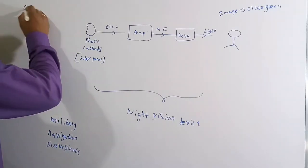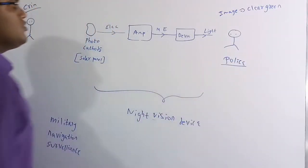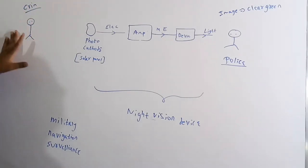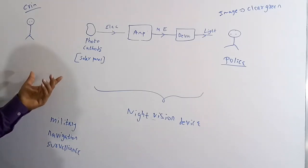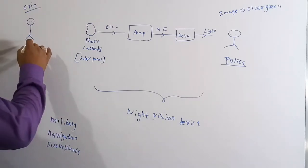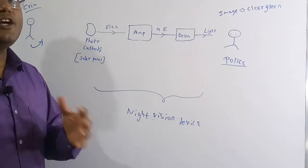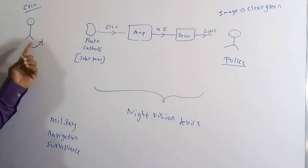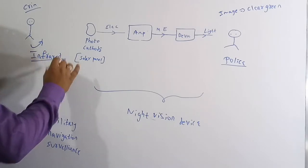Here is a rough block diagram of a night vision device. Suppose there is a criminal and a police officer or military person. At night there is no light, but every human body emits infrared rays due to body temperature. Hotter objects emit more infrared rays, but even the human body has enough temperature to emit them.